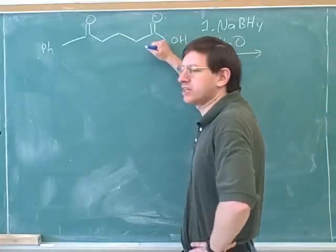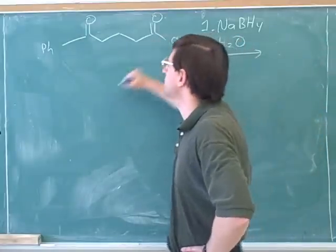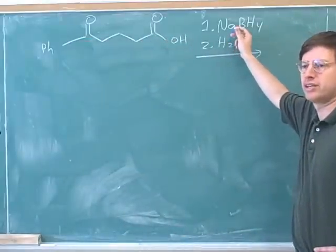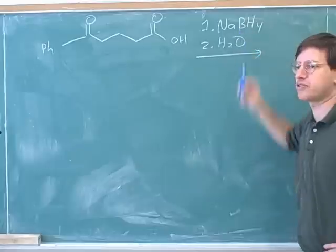Yeah. So what type of functional group is this on the right? It's a carboxylic acid. And what type of functional group is this on the left? A ketone. Good. What's the name for this reagent? Sodium borohydride. That's right. Okay.